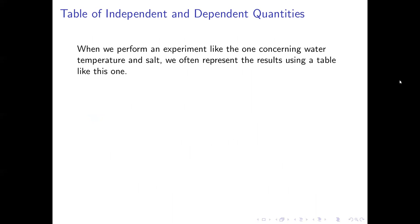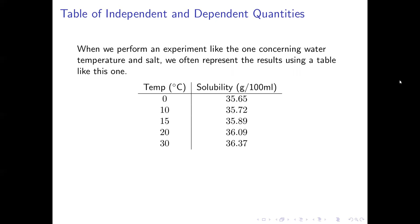Now let's think about what we might do mathematically with the results. It's very common to represent your results using a table. We'd have a column with the different temperatures we've set the water to, measured in degrees Celsius, and in another column we'd have the solubility, measured in grams per 100 milliliters, of the salt in each sample of water at each temperature.